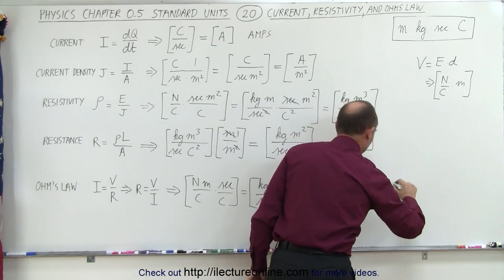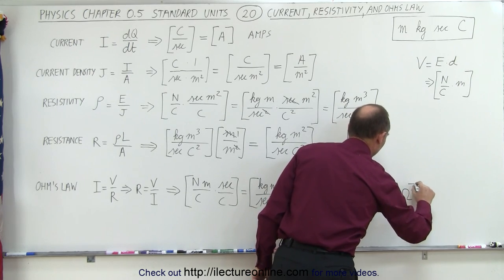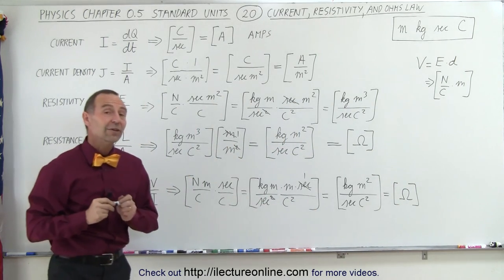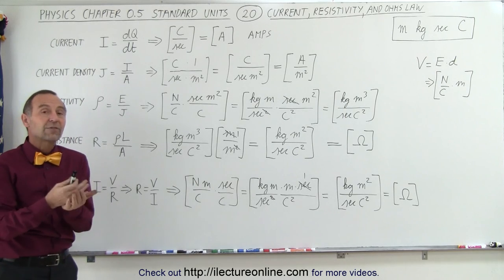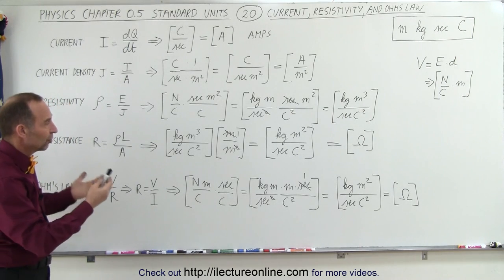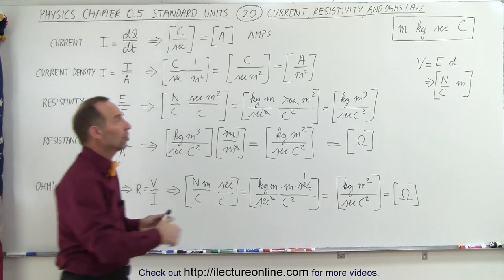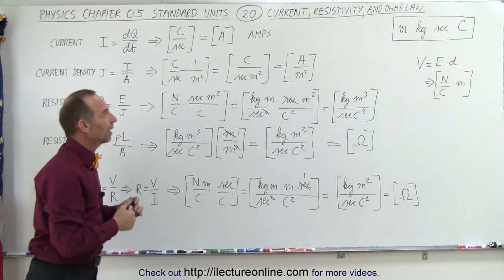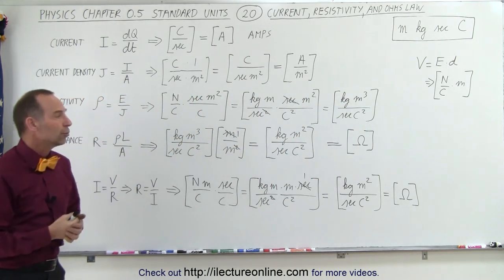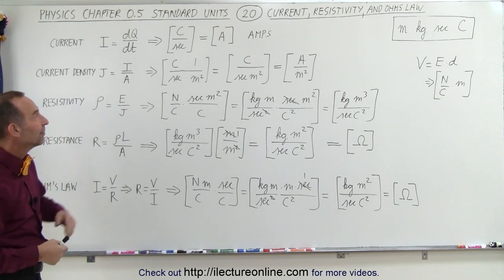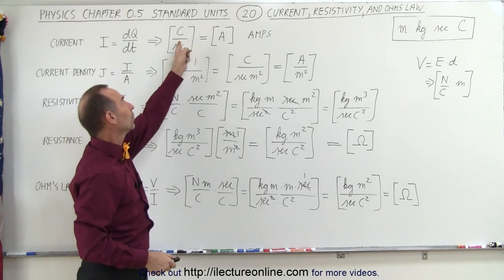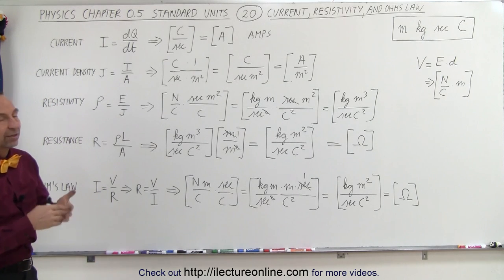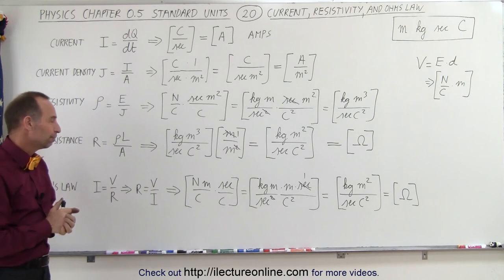And we know that this equals the standard units for resistance, which is ohms. What's interesting — just like in the previous video with capacitance, which is in terms of Farads and can be reduced to standard units — the same applies here. Resistance can be reduced to standard units, and even current in amps can be reduced to the standard units of meters, kilograms, seconds, and charge in Coulombs.